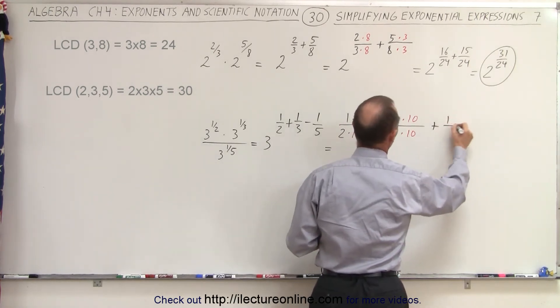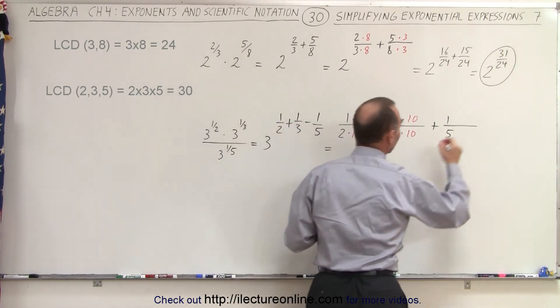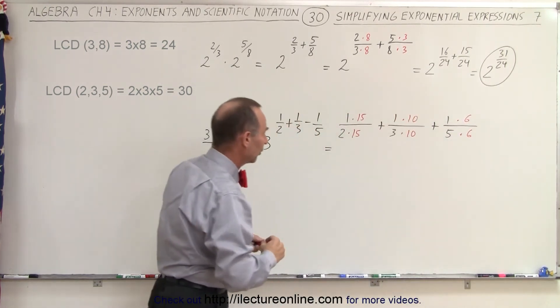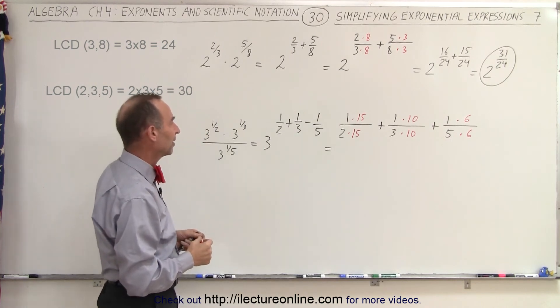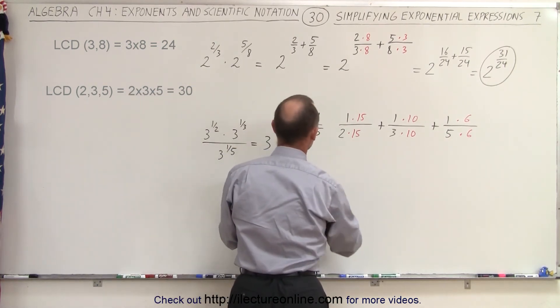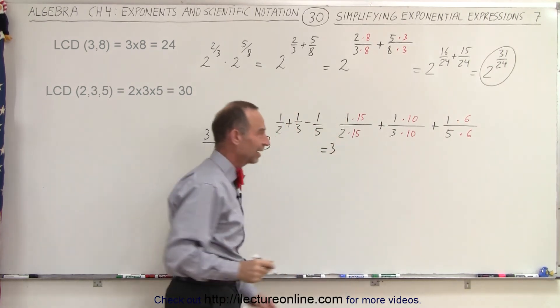And then plus 1/5. And here we have to multiply both the top and the bottom by 6 to make the denominator equal to 30. And let's see here, I think I forgot my base. Can't forget my base. So let me move this over just a little bit. That's equal to 3 raised to all of this.